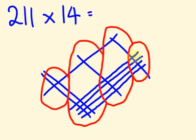1, 2, 3, 4, 5, 5, 6, 7, 8, 9, and we have 1, 2. So our answer, 2,954.